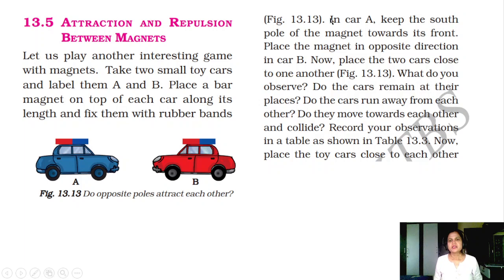Fix them with rubber bands. Do opposite poles attract each other? Yes. In car A, keep the south pole of the magnet towards its front like this. This is the south pole. This is north. Place the magnet in the opposite direction in car B. Now place the two cars close to one another as shown in the figure.